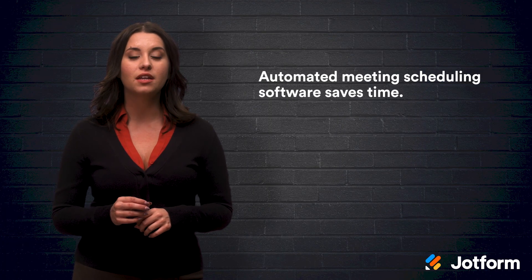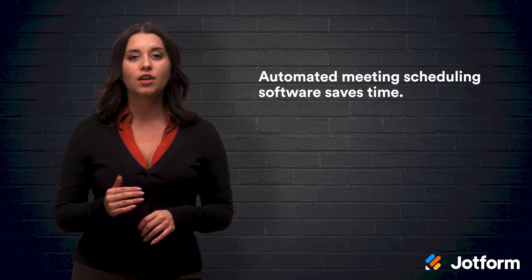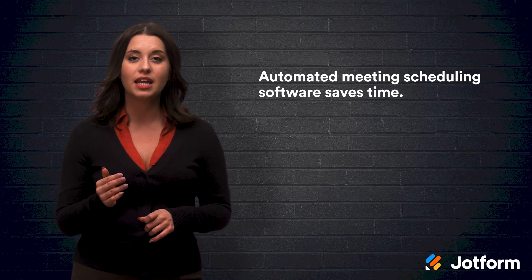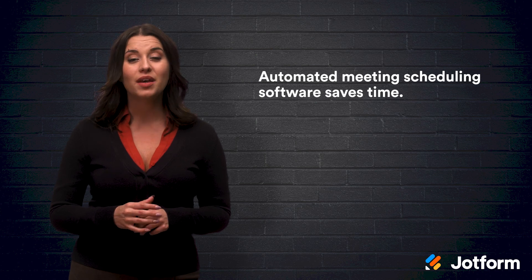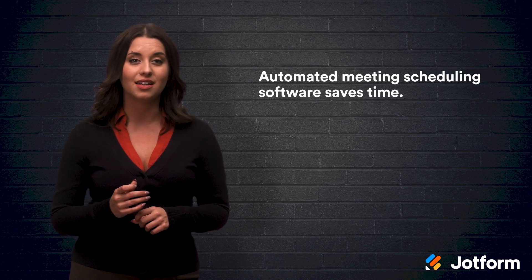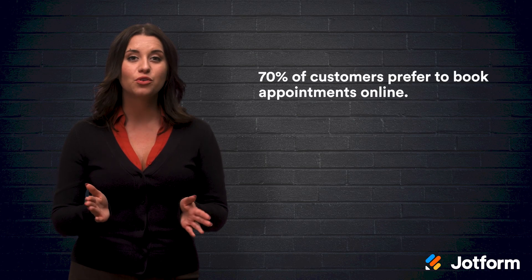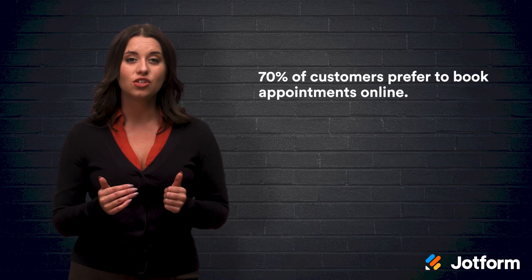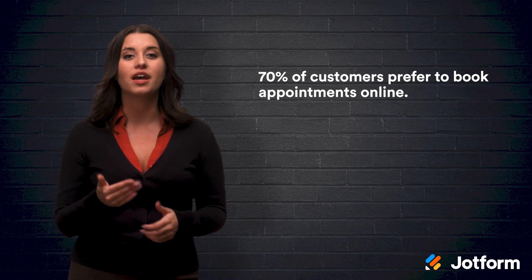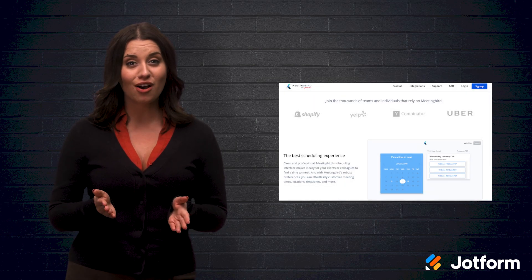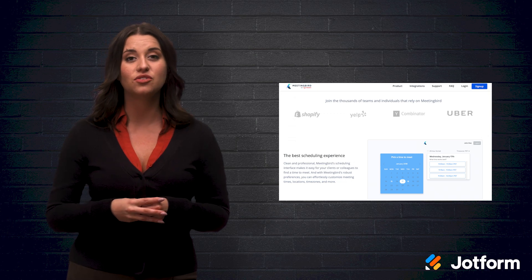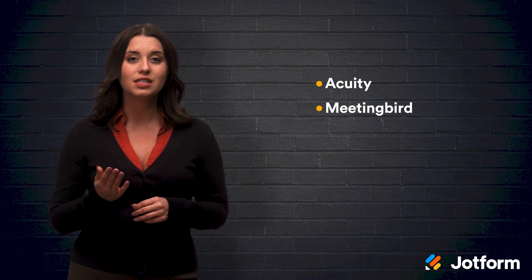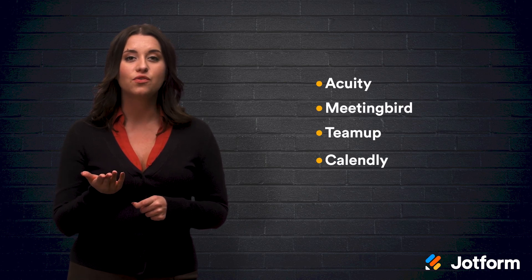Next, try using automated meeting schedule software. Using automated appointment booking software can save you up to 10 hours every week of administrative staffing and reduces human error. More importantly, automated appointment setting software enhances automated data collection. 70% of customers prefer to book appointments online, and appointment setting software can speed up the data capture and conversion process. Enhance your automated appointment booking pages by promoting them on social media, since 37% of potential clients will find your booking page through social media. Tools like Acuity, Meetingbird, TeamUp, and Calendly are great to use for automated scheduling.